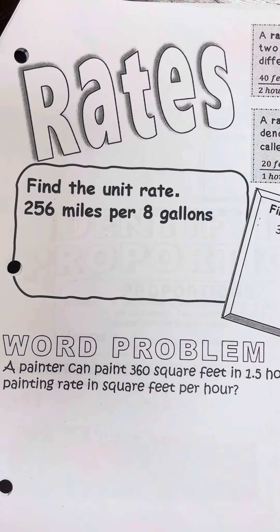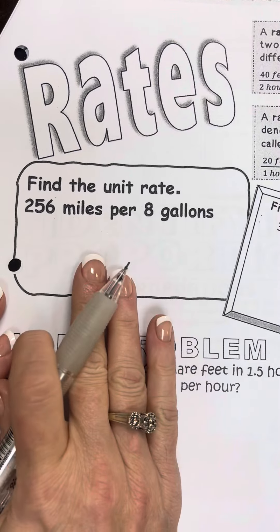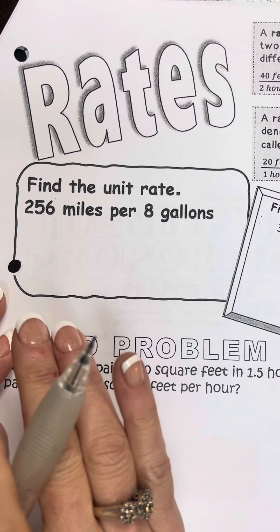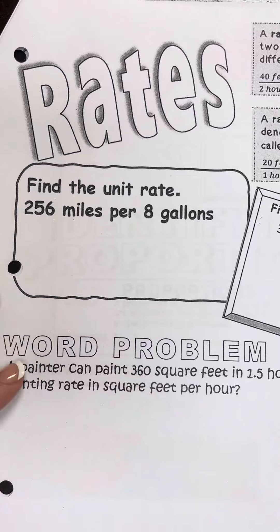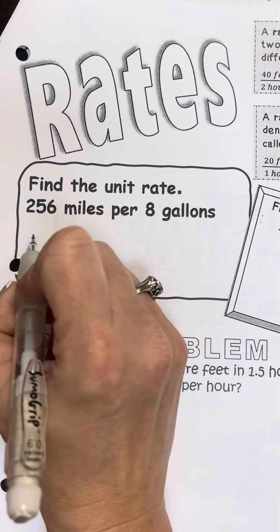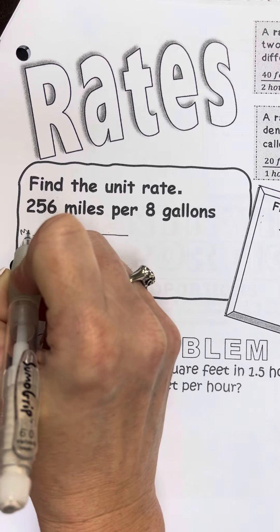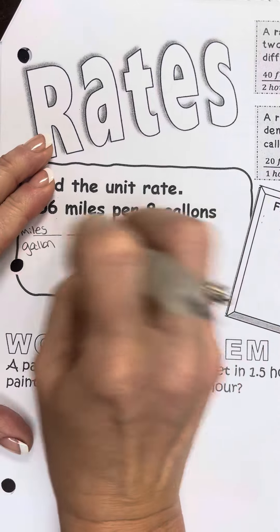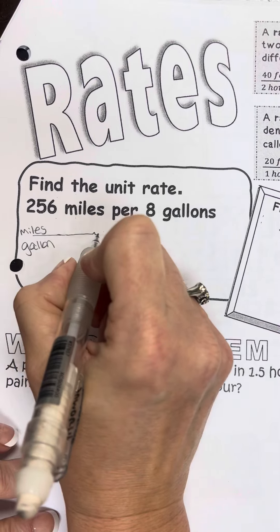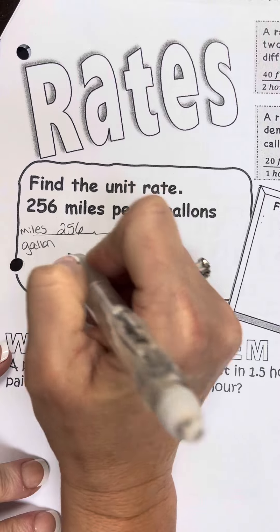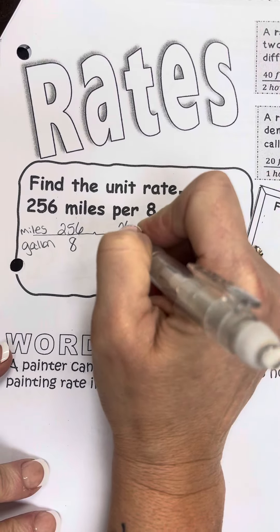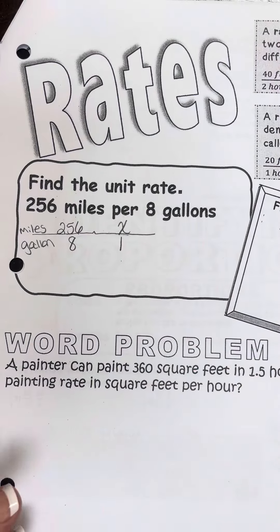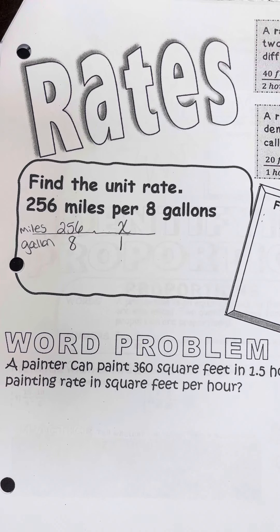We're going to get started with looking at proportional relationships today. I want to come back to this problem from yesterday so that we can relate what we're doing back to that. Find the unit rate. So we had miles per gallon — 256 miles to 8 gallons — and I wanted to know how many miles per one gallon. The difference in 7th grade and 6th grade proportions is that we have to write an equation and then solve.